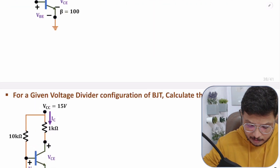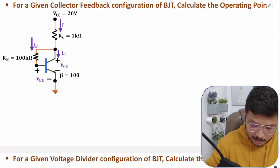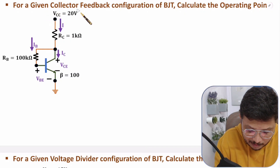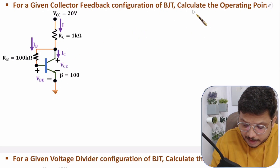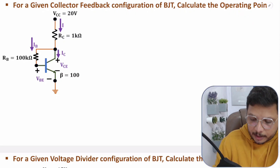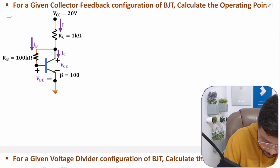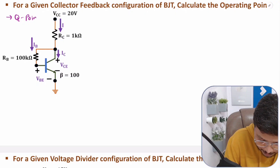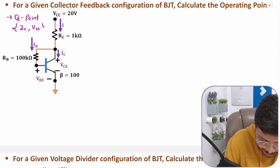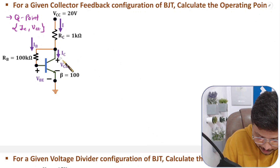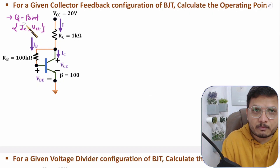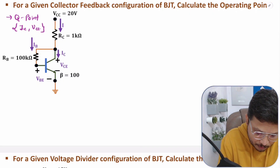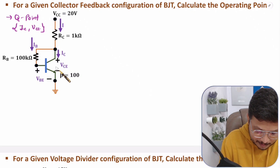The first question is based on collector feedback configuration of BJT. This is a collector feedback configuration and we need to find the operating point. Operating point means Q-point, and in the operating point we need to find current IC and voltage VCE — IC is the output current and VCE is the output voltage. That is what the operating point is, and that is what we need to find here.